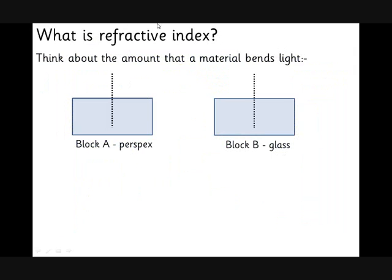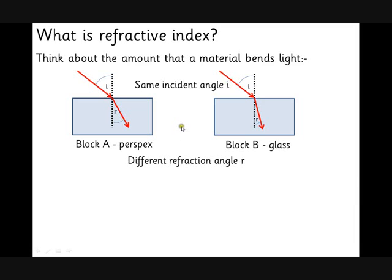Okay, so that gets us on to refractive index. Here's a couple of blocks. We shine a ray of light at this perspex block, it goes there. We shine a light at the glass block, it goes to a different angle. What does this tell us? They've got the same angle of incidence but they've got different angles of refraction. Why does this happen?